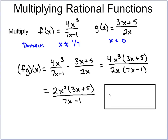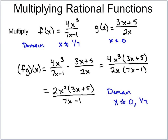The final thing we have to do is state our domain. Notice the only thing left on the bottom is 7x minus 1, so you might think the domain is just x cannot equal 1/7. However, since this is a combination of two functions, we need to keep both parts of the domain from the original functions. So the domain is x cannot equal 0 or 1/7.